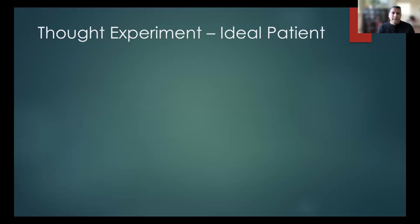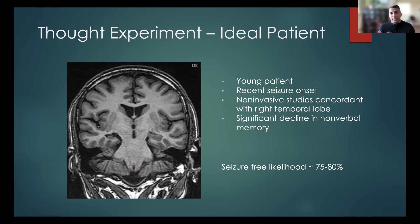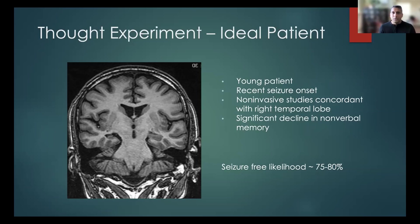I like to start with a thought experiment. If you were to imagine the ideal patient for epilepsy surgery, I would picture a young patient, because we know younger patients tend to do better with surgery. I'd think about someone with a recent seizure onset, because a more recent onset makes it more likely they'll become seizure free. And all the non-invasive tests would point to one area — ideally the right temporal lobe, which is probably the safest area to operate in and generally has the lowest risk for cognitive decline.